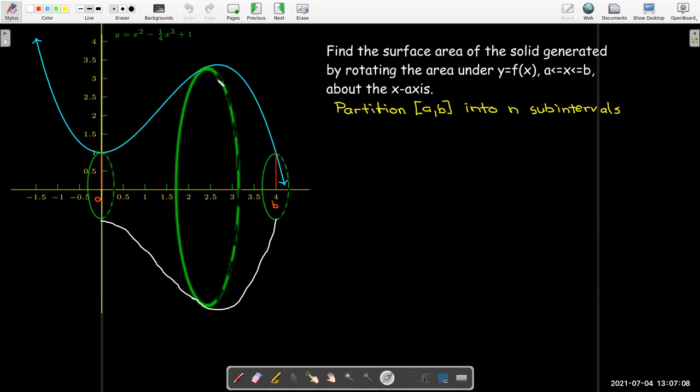Suppose I have a curve that represents a function across some bounds from x equals a to x equals b, and I generate a solid by rotating that curve around either the x-axis or the y-axis. So here I have rotated about the x-axis, and I'd like to calculate the area of the surface of that solid that I've generated.